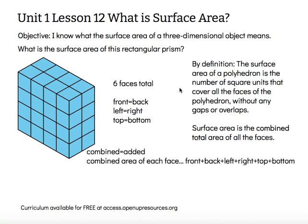The front is four by four, which means the back is also four by four. So the front is made up of 16 square units, and the back is made up of 16 square units. The right side is four by two, so there are eight squares on that side. The left side would also be eight square units.